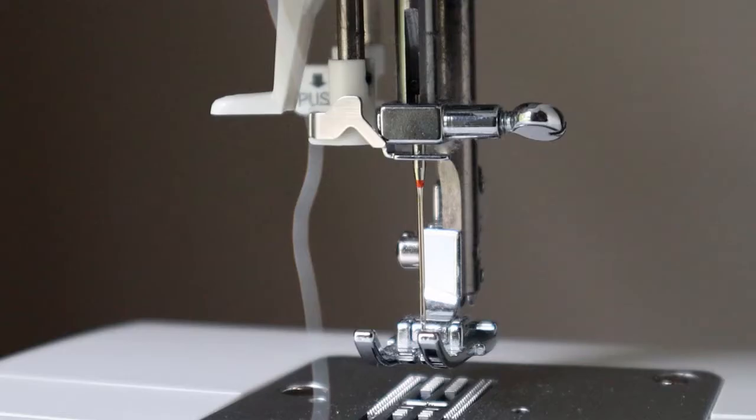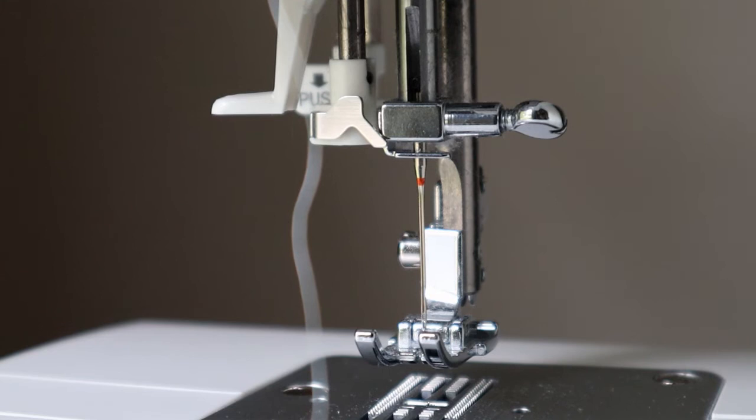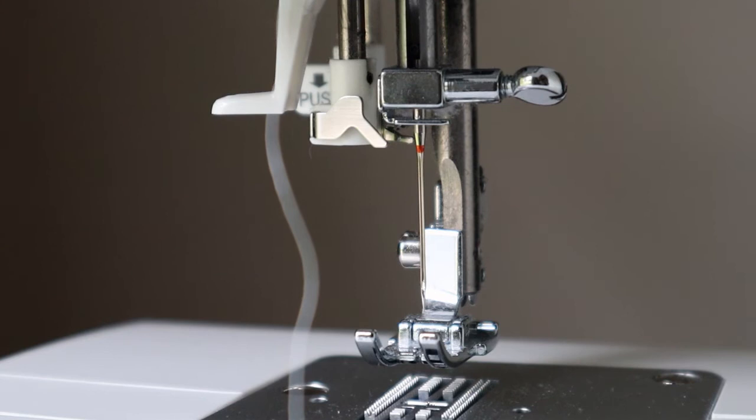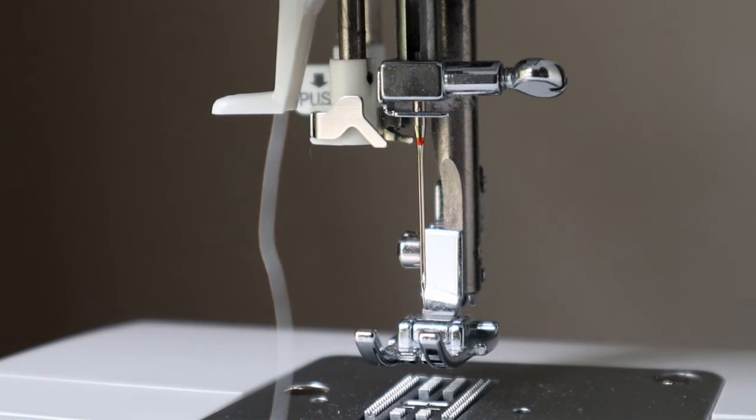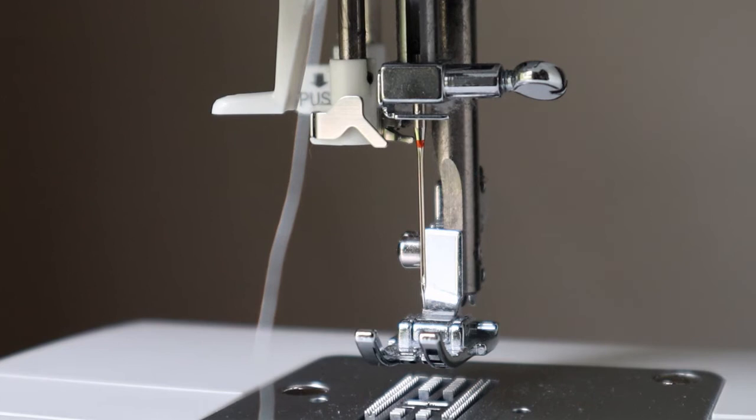The last step is to thread our sewing machine needle with the automatic needle threader. You can see we're zoomed in on our needle. The first step is to make sure that our needle is in the most upright position. You're going to use your wheel on the side of the machine and just spin it until you get it at the most upright position. You want the needle just slightly on its way down, so right here is the perfect point to use this automatic needle threader.